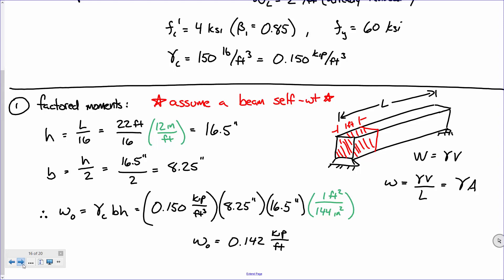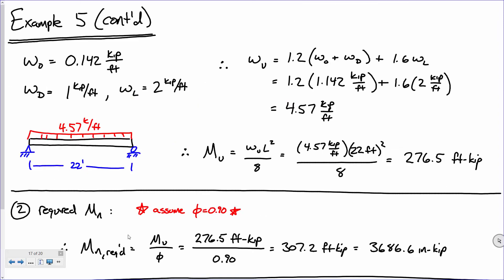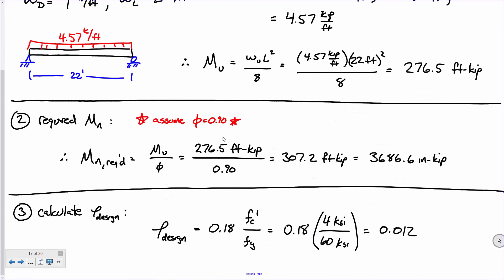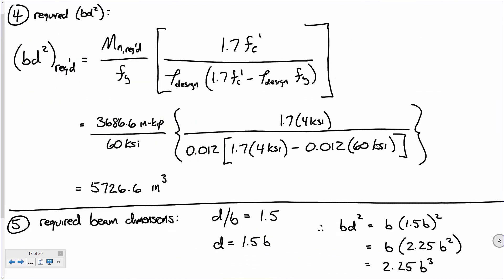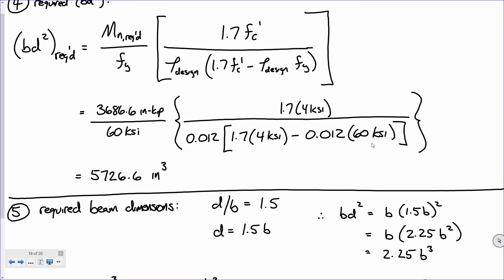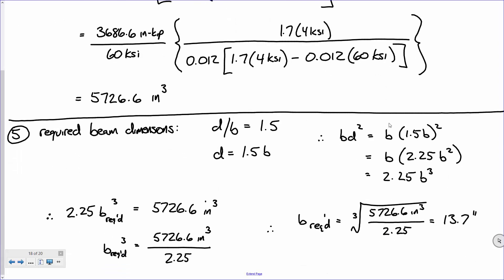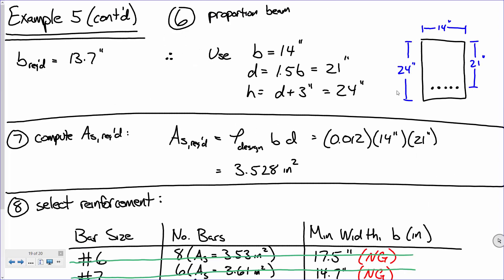We assumed a beam self-weight and a phi value of 0.9. Using that beam self-weight, we were able to compute a factored distributed load and ultimately a factored moment on the section, and from that factored moment we could go into design. The assumption of phi = 0.9 will more than likely hold true, but just in case we need to verify it. We calculated our rho value for design. Using that rho value we determined the required section properties — that BD² of 57.26 in³ — and from the D/B ratio we determined the required width of the beam.